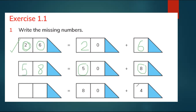Let's look at the next one. How many ones? Four ones. How many tens? Eight tens. So 80 plus 4 will be 84. Four ones and eight tens make 84.